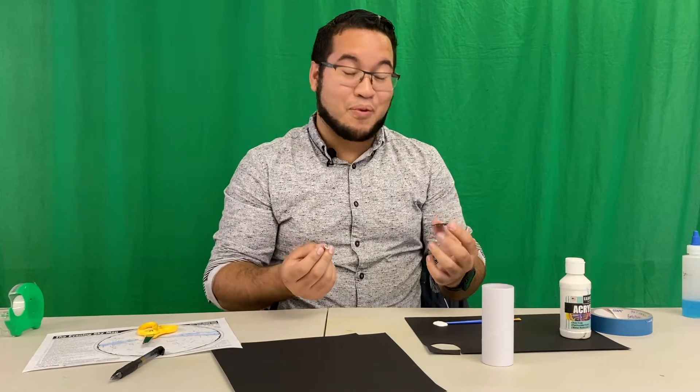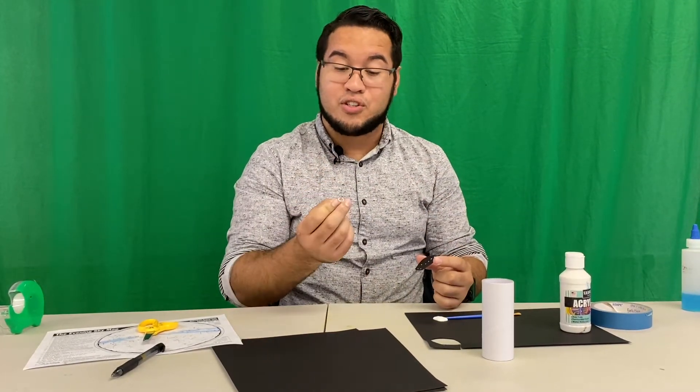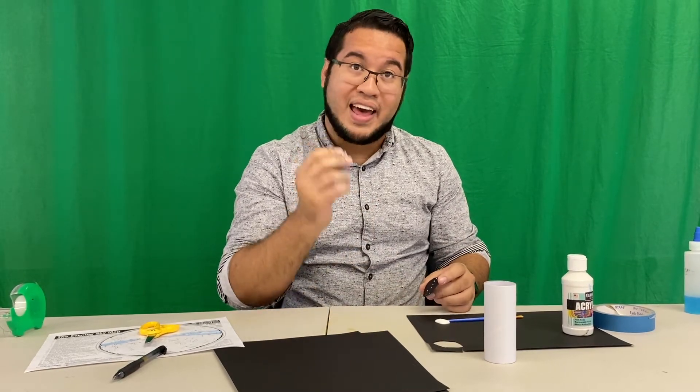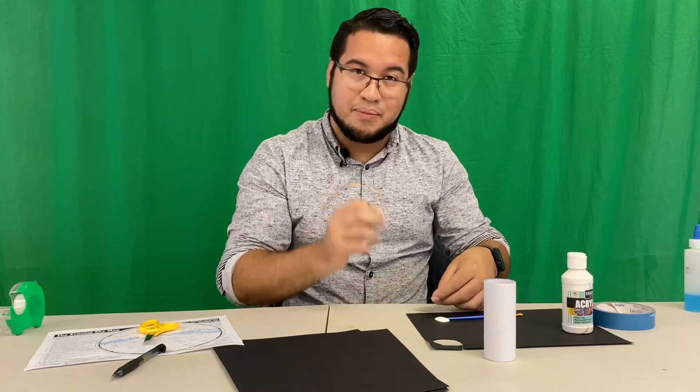Now with this next step we're going to go ahead and actually poke some holes through the stars that we made. Now you can do this using a thumbtack or a toothpick that you have at home but you want to make sure you are extra careful and you don't want to hurt yourself. So if you need to go ahead and grab a parent for this step go ahead and do that now.